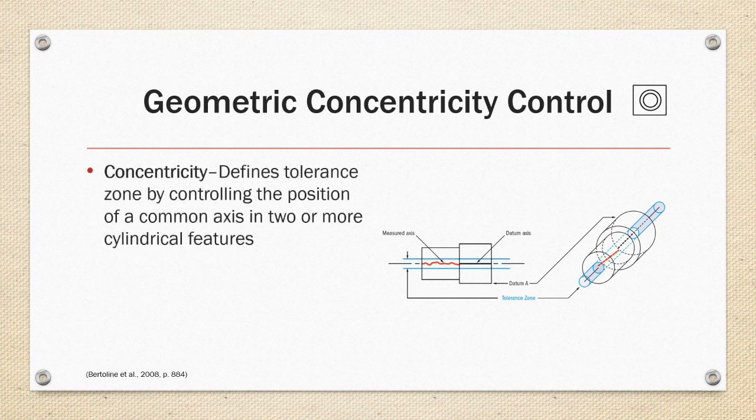Concentricity control defines the zone by controlling the position of a common axis in two or more cylindrical features. The axis must fall within the tolerance zone, which is a smaller cylinder. This symbol, which is two circles that are concentric to each other, is actually obsolete in the latest version of the standard. A combination of position and runout replaces the need for this particular symbol.